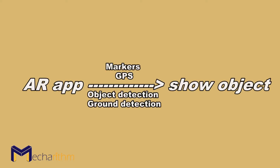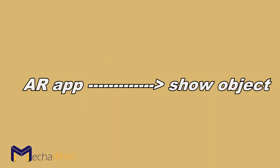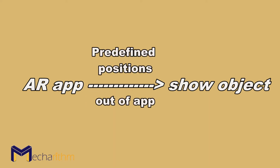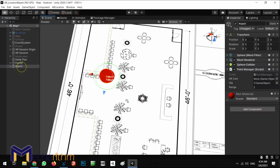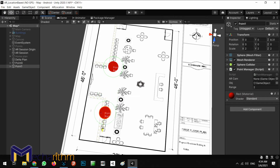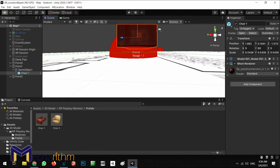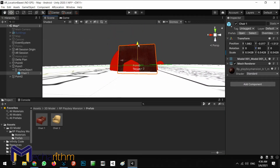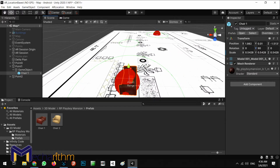To solve this problem and increase the accuracy of object placement in augmented reality, we must remove the location process from dependence on the environment. We need to take special calculations out of augmented reality and pre-select the location of objects in the environment. In this way, we can place objects anywhere we want with the utmost accuracy, and no calculations will be the application's responsibility.